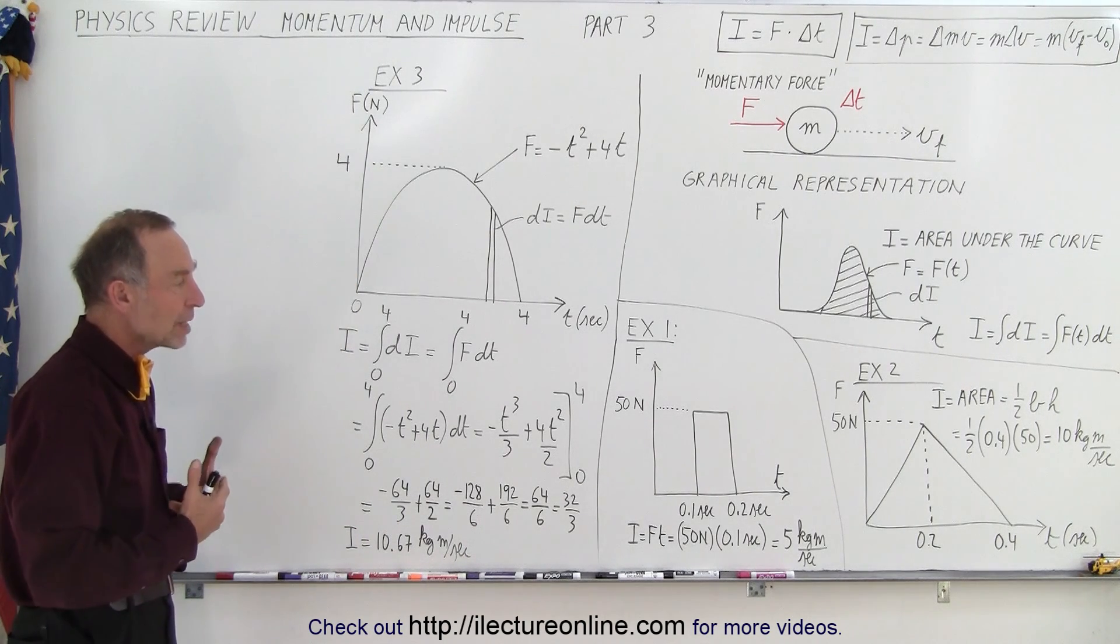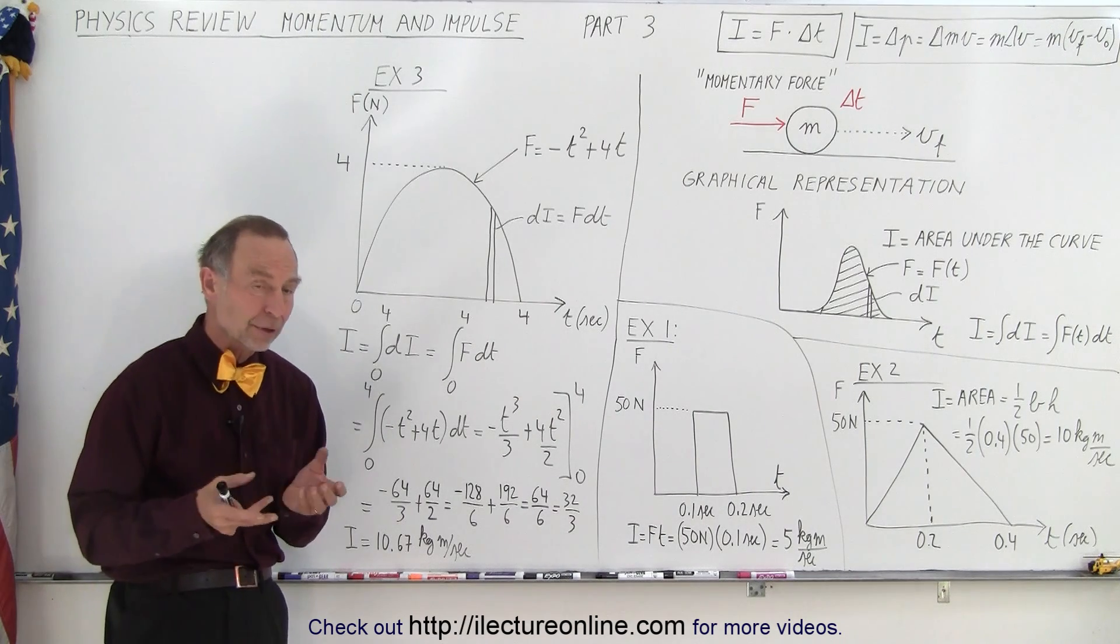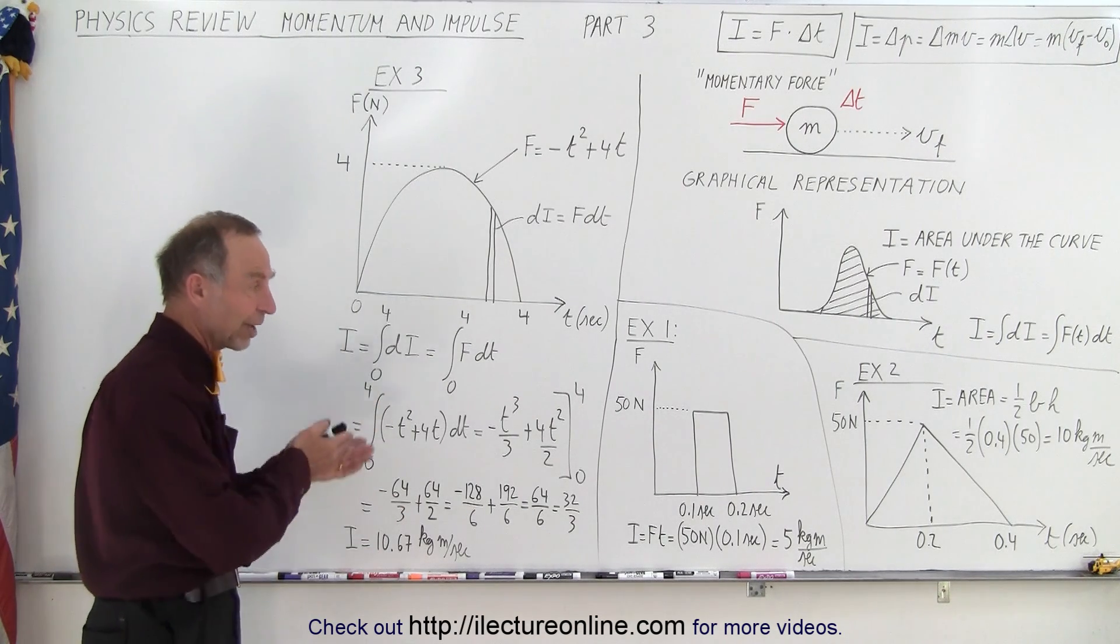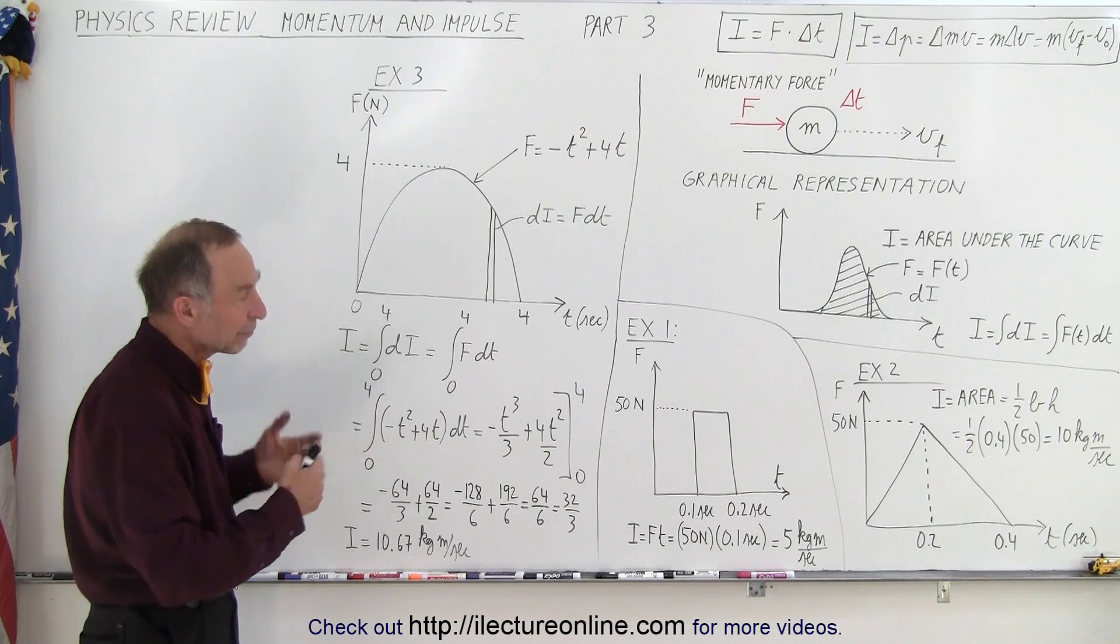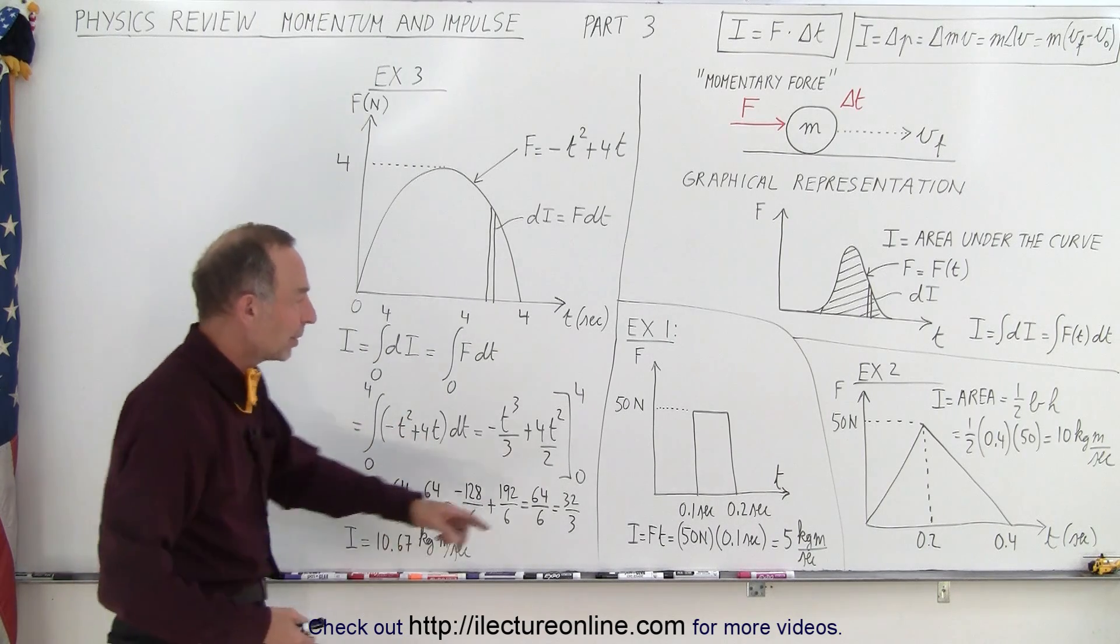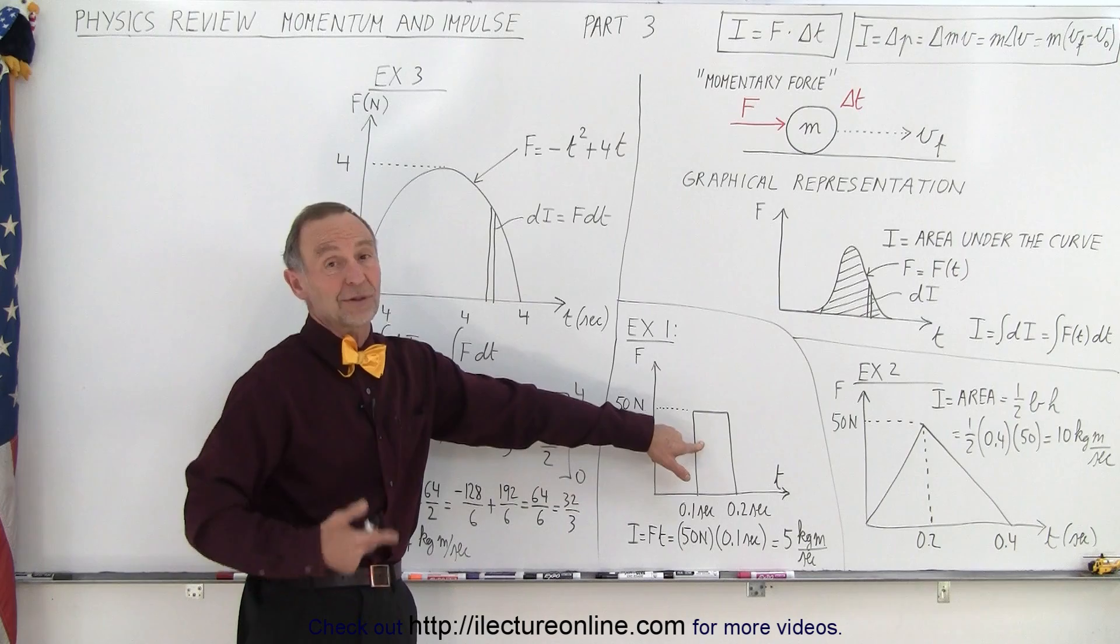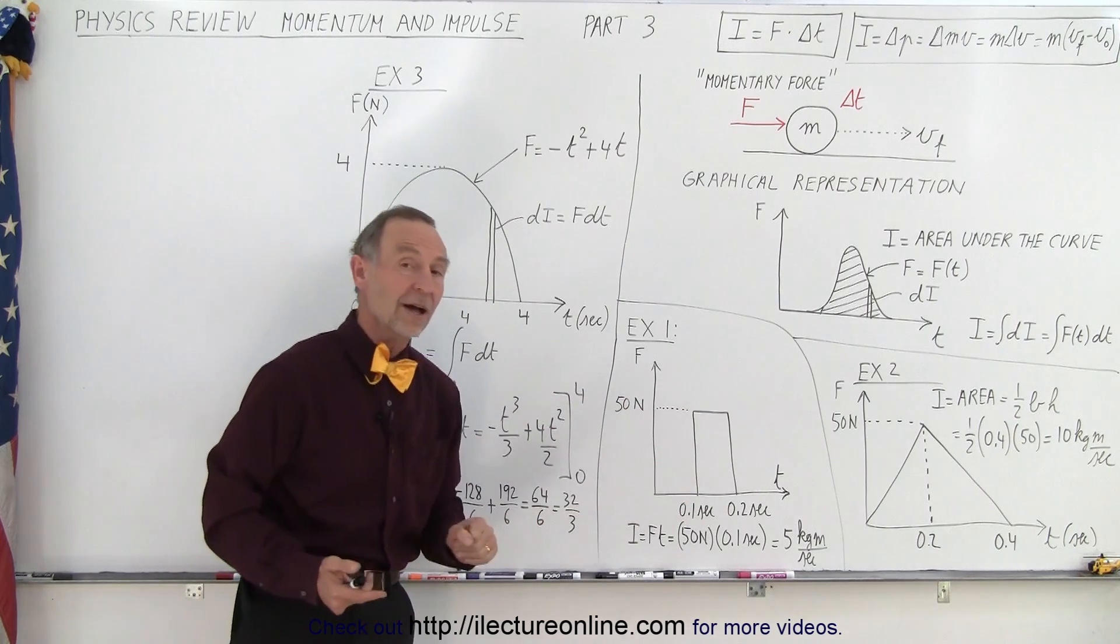So that is how we look at the impulse. That's how we calculate the impulse. It's simply the product of force times the time. And of course, depending upon how that's set up, if it's set up like this, it's easy. We simply multiply the average force times the time.